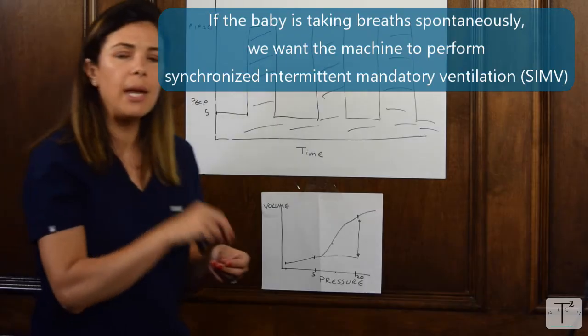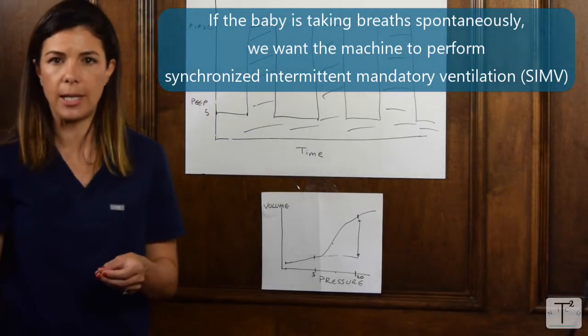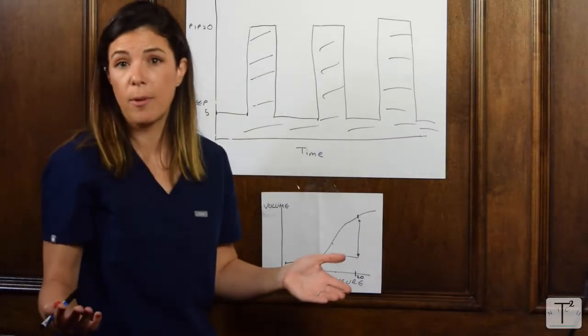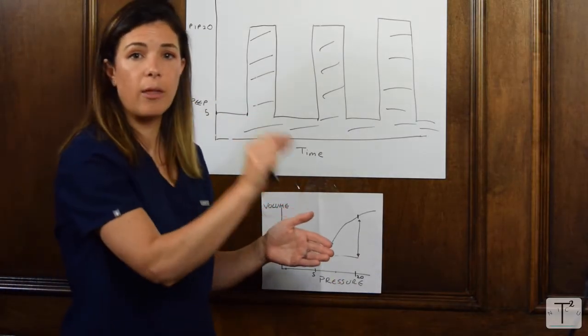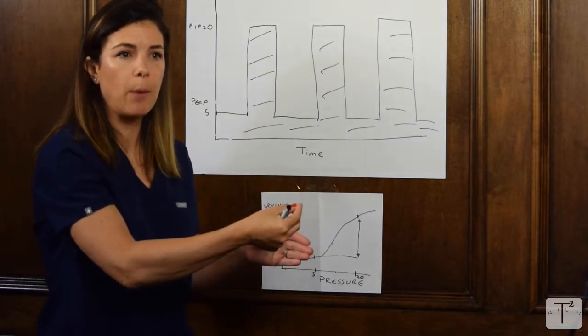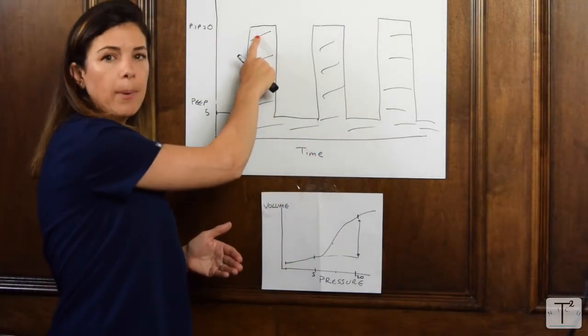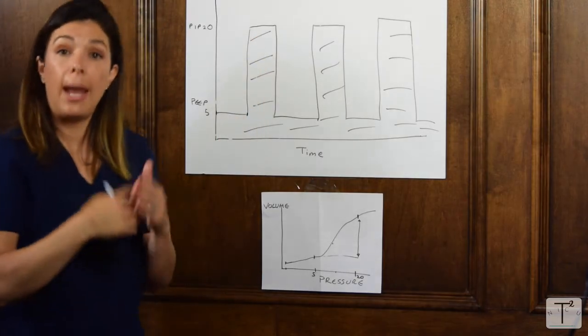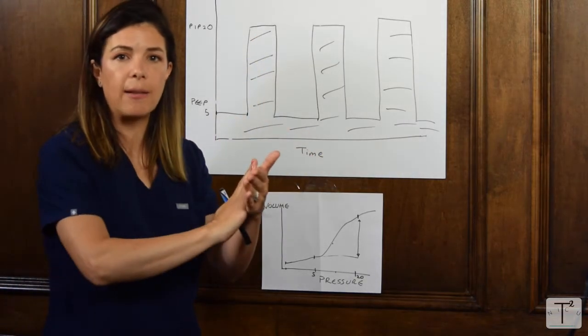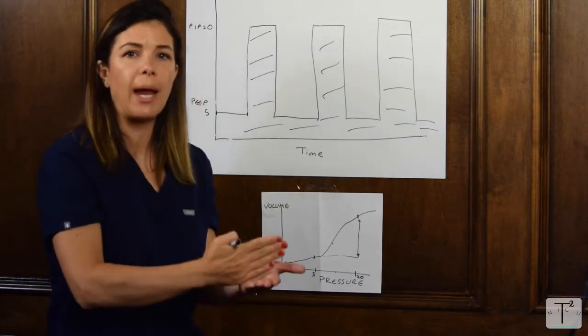What we really do is synchronized intermittent mandatory ventilation, which means that if the baby breathes 20 times a minute, even if you set the rate at 30, for those 20 breaths, the machine will recognize when the baby's about to take a breath, and then give it the full PIP. In that situation, the baby is not always going to be fighting against the machine. It might not be exactly two seconds. It could be at one and a half seconds, and then three seconds. But the machine will wait for the baby to take a breath, unless it's lasted too long, and then it will force a breath.